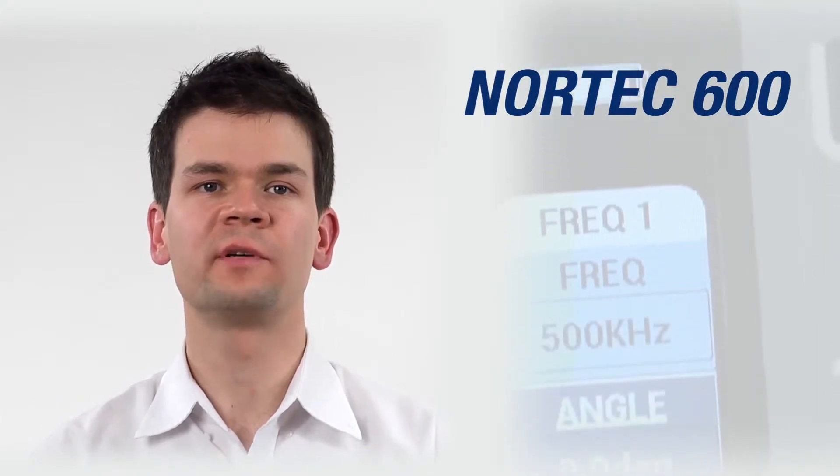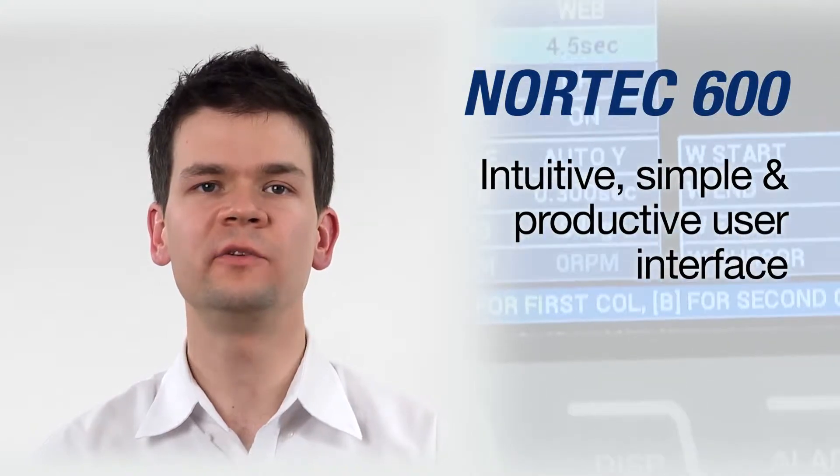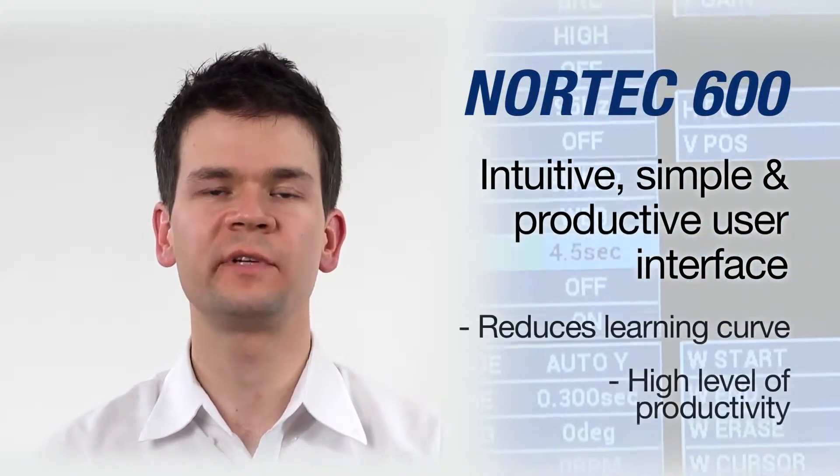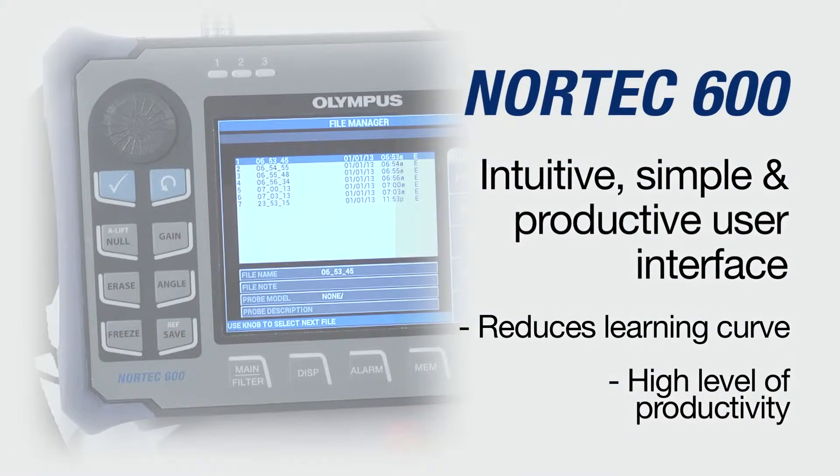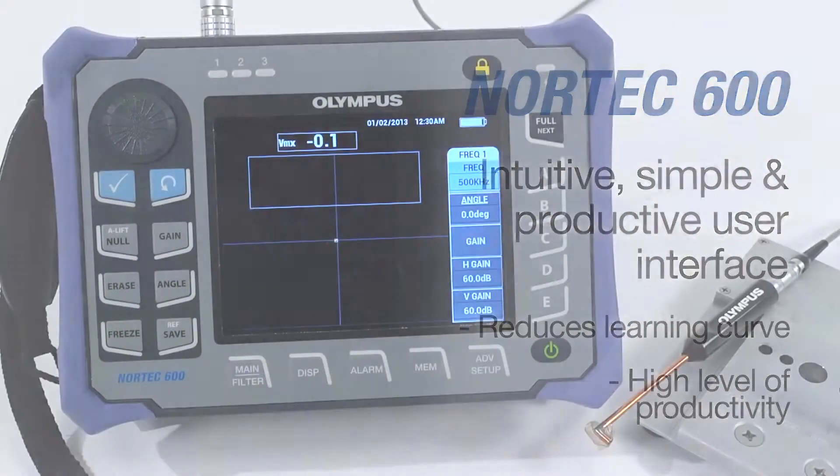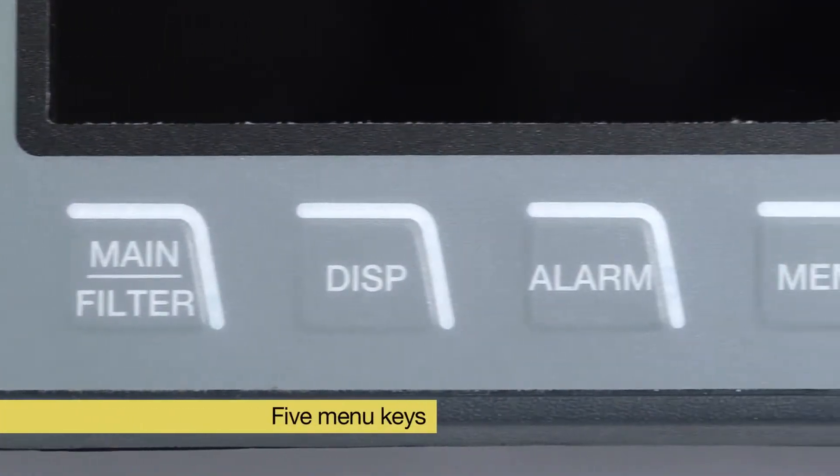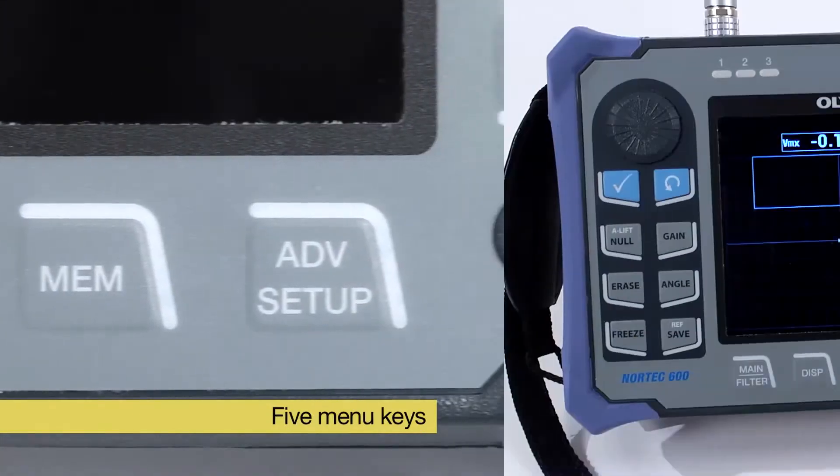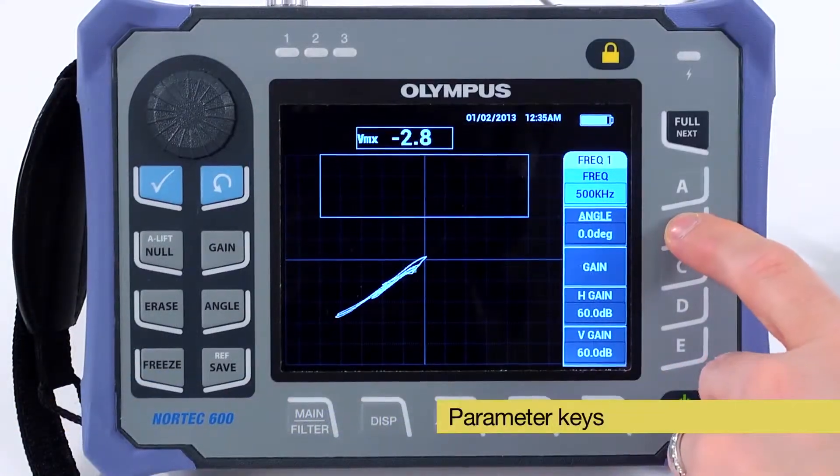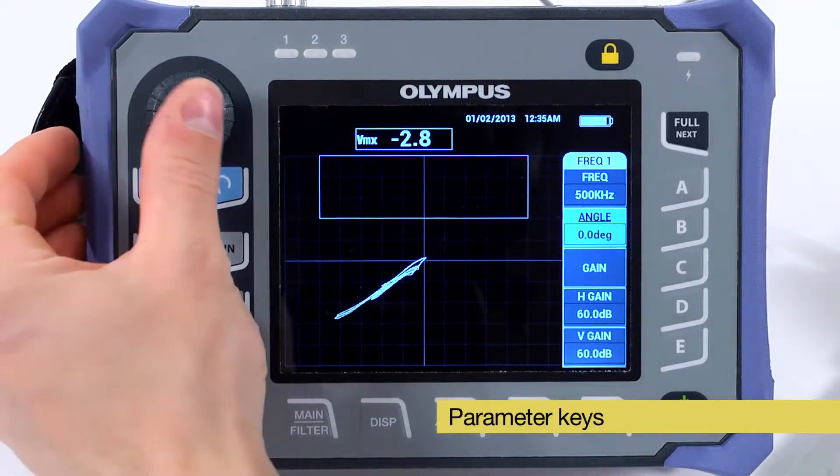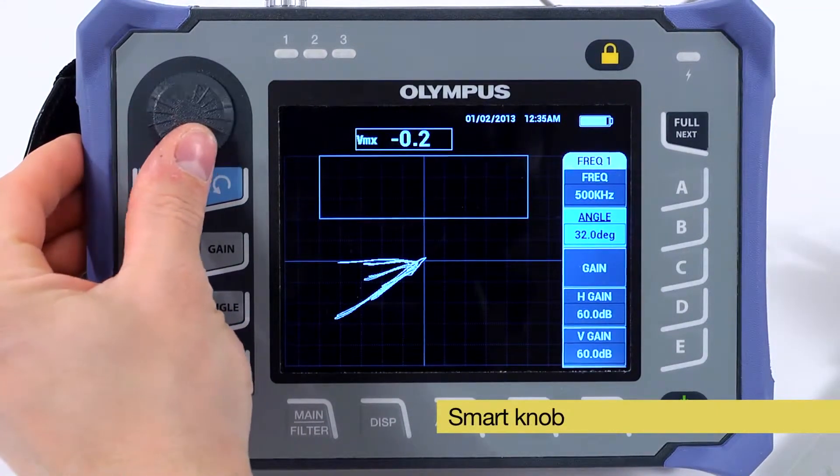The Nortec 600 offers the most intuitive, simple and productive user interface on the market. This newly redesigned interface significantly reduces the learning curve while maintaining a high level of productivity when inspecting for any level of user. The Nortec 600 user interface features five menu keys. Pressing a menu key toggles between the different menu pages for locating parameters easily. Once a parameter is found, it can be selected with help of the parameters key and its value changed with rotating the smart knob.